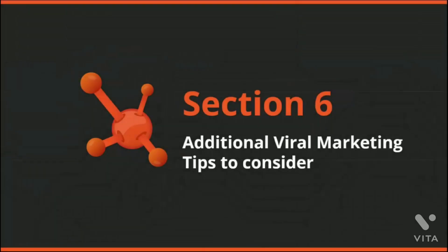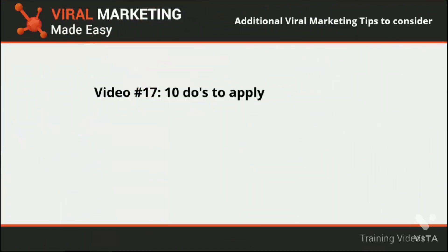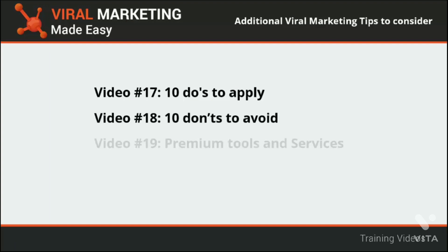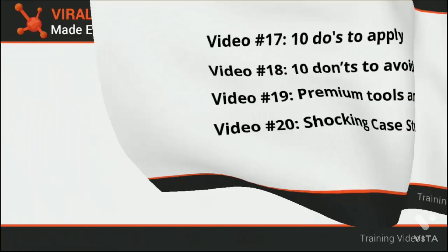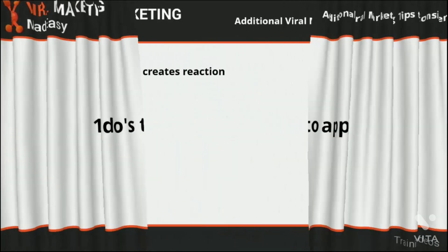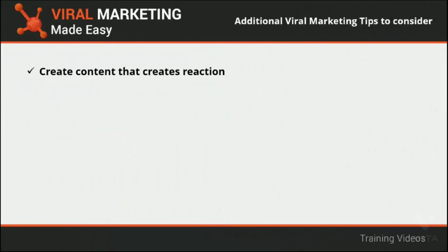Welcome to section 6 of our viral marketing video training. In this section we'll talk about ten dos to apply, ten don'ts to avoid, premium tools and services, and shocking case studies. We hope you enjoy and get the most out of this training section. Ten dos to apply: create content that creates reaction — making people react to your content is the best way to make it go viral.